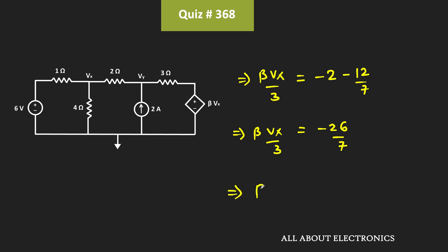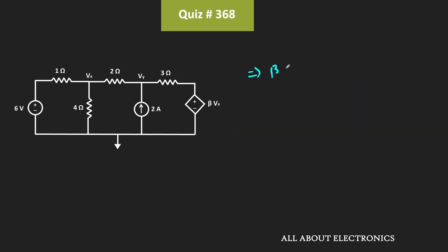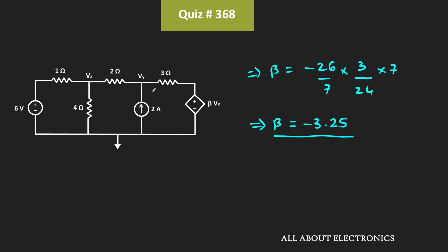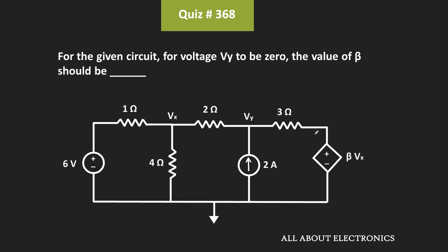That means β equals minus 26 divided by 7, times 3, divided by Vx. Substituting the value of Vx as 24 divided by 7, and simplifying, the value of β comes out as minus 3.25. Therefore, for this voltage Vy to be zero, the value of β should be equal to minus 3.25.